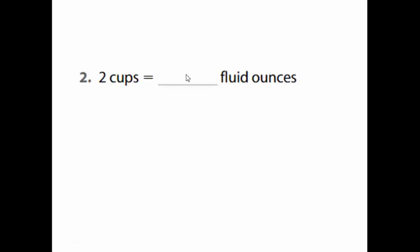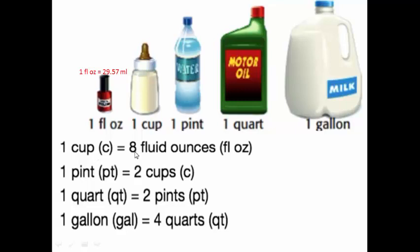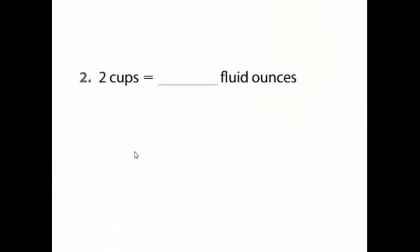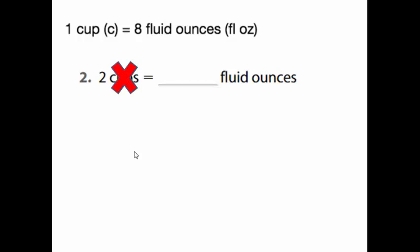So let's start to solve our today's questions. If you have two cups, how many fluid ounces is that equivalent to? Let's go back — one cup equals eight fluid ounces. So two cups: we cancel the word cups and multiply 2 by 8 fluid ounces. Finally, it will be 16 fluid ounces.